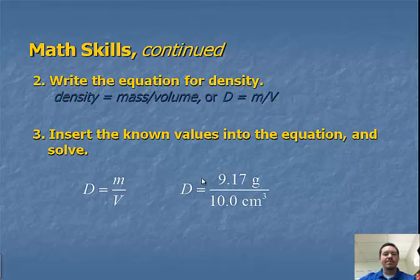Plug in what we want to find, or plug in what we have. And then to solve for what we want to find, so we take 9.17 grams divided by 10.0 cubic centimeters. We get the density of the substance as 0.917 grams per cubic centimeter.